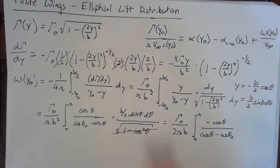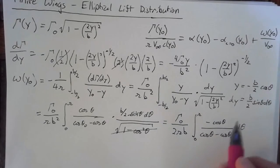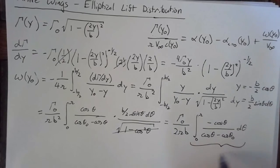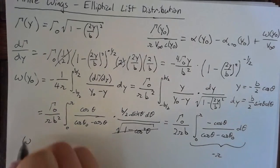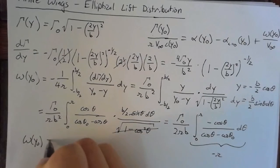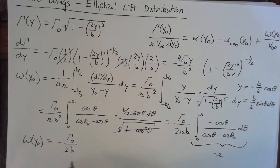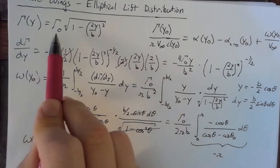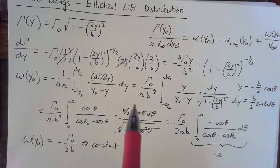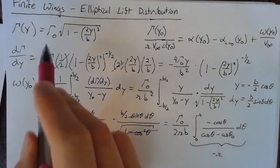I switched the order to bring a negative out front because we know what the integral of this integrand is — this entire thing is simply negative π. So, this means that the downwash at a given y₀ location is going to be negative gamma naught over 2b. This is exciting because this is not actually a function of y₀ — it is a constant. This means that for the special case where our lift is defined by an elliptic distribution, the downwash is constant over the entire wing.